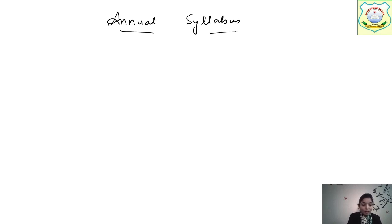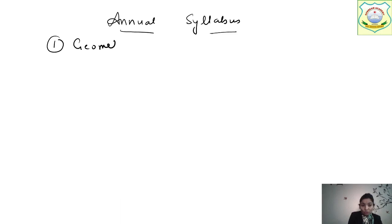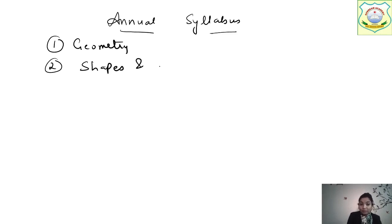Now in Class 5, your first chapter coming in your annual exam is Geometry. Only 6 chapters are there, so you have to be prepared. Then the second is Shapes and Patterns.